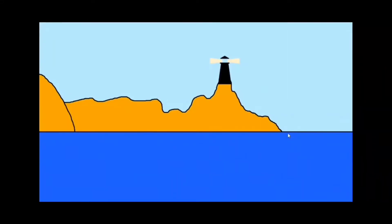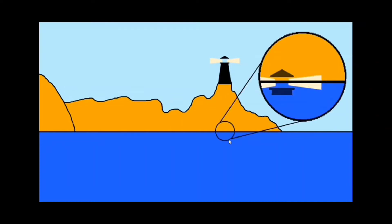To demonstrate how a sextant works, we'll have a look at this image of the coastline. The sextant works by taking the top of this lighthouse and moving it through a series of mirrors down onto the horizon, then measuring the angle that results. If you look through a sextant, you'll see the lighthouse superimposed over the horizon, and on a scale on the sextant you'll be able to read off the angle. That's how we get a vertical sextant angle.